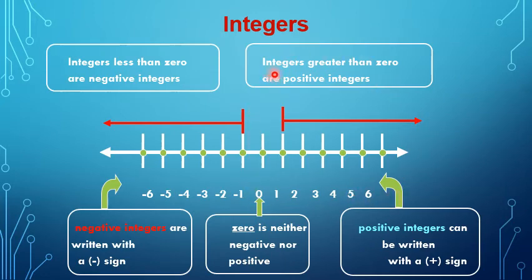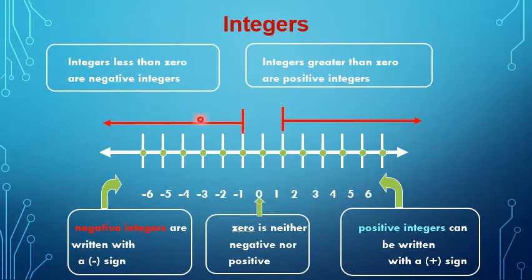Integers greater than zero are on the right side of zero on the number line — they are positive integers. Integers on the left side of zero are less than zero, and they are negative integers. Zero is neither negative nor positive.